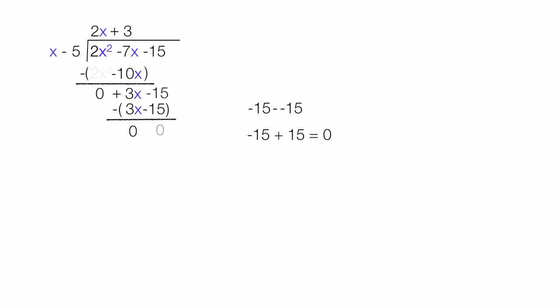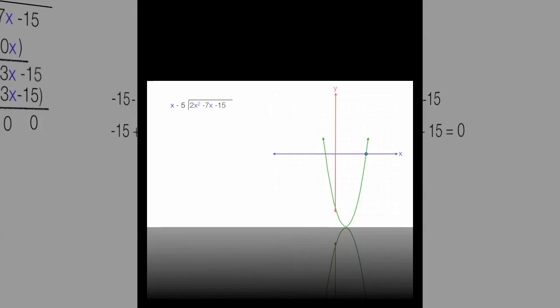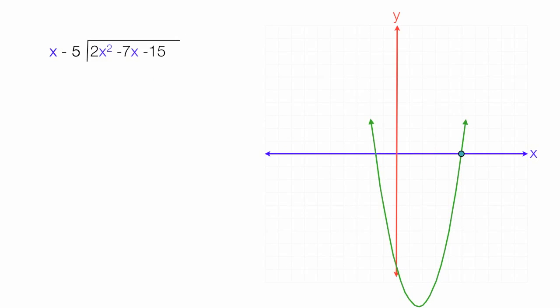So now I have my two factors. Let me go back to the very beginning where we started and show you how this all fits together. I have 2x plus 3 as the answer to the problem. The factors are x minus 5 and 2x plus 3, and this equals 2x squared minus 7x minus 15. And now I know both points where the parabola crosses the x-axis.